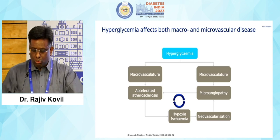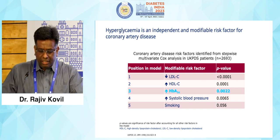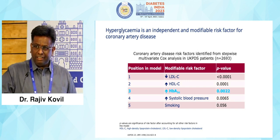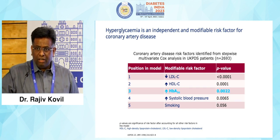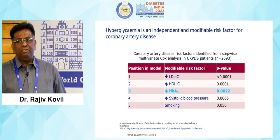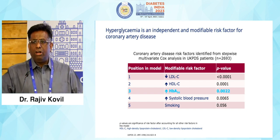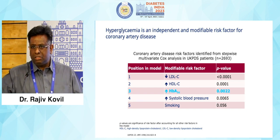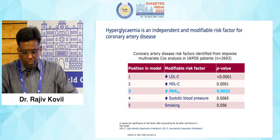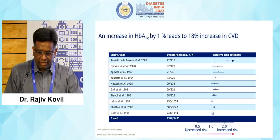We know that hyperglycemia affects both micro and macrovascular complications. From the UKPDS study, a multivariate Cox analysis of approximately 3,500 patients with cardiovascular events showed that modifiable risk factors are key. The whole concept of modifiable risk factors emerged from UKPDS — non-modifiable factors include age, sex, and certain genes, but modifiable risk factors of lipids, blood sugar, blood pressure, and smoking were first identified by UKPDS.